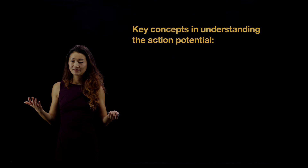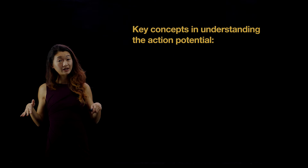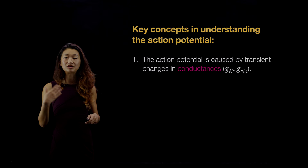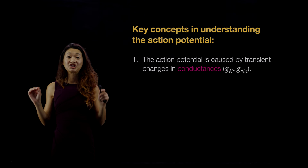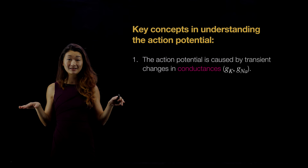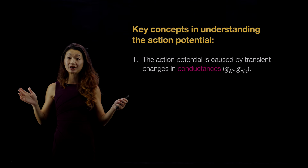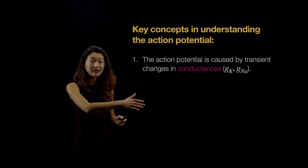There are a few key concepts to understanding the action potential. The first is that the action potential is caused by transient changes in conductance — G_K and G_Na — voltage-gated conductances that change in time really quickly. These are mediated by special ion channels that are voltage-gated, not the same as the leaky resting ones. In the case of sodium, they also inactivate after a certain time. You couldn't have this happen if all you had were the resting channels we talked about in the previous lecture segments.